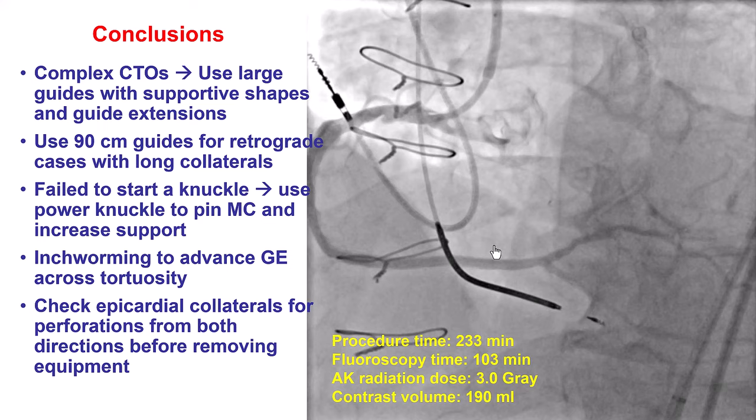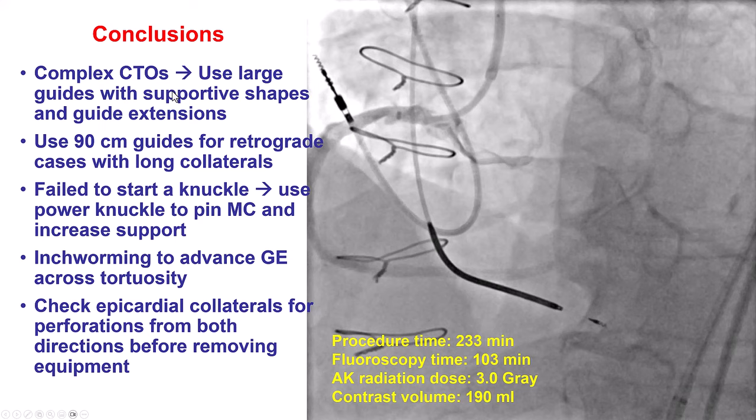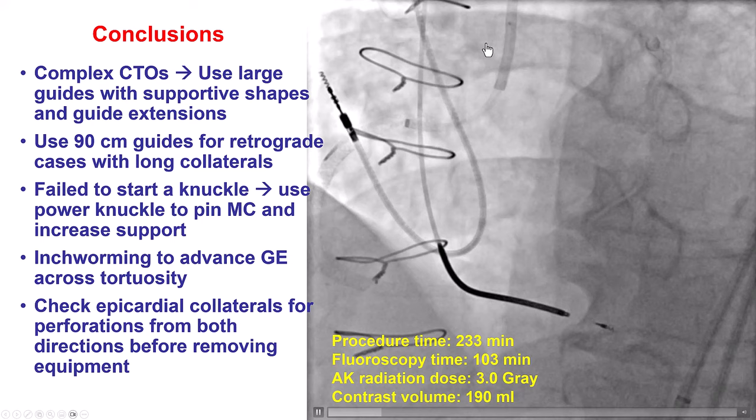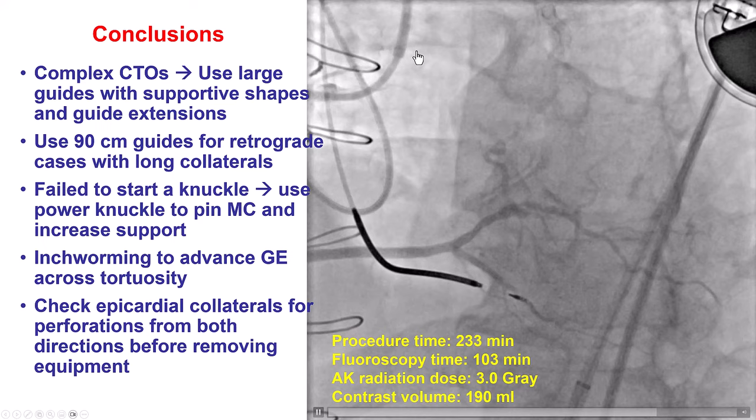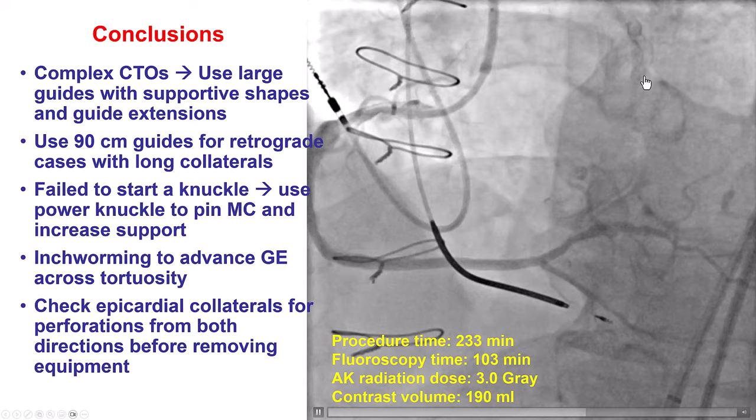The lessons from this case: first, the importance of support. The most critical event was using large guides — going to AL2 for both the vein graft and the native right coronary artery. Those larger Amplatz guides provided extra support. We also used guide extensions in both the antegrade and retrograde directions, and short guides given the long collateral length, which is especially important for epicardial collaterals that are often long.